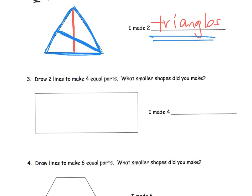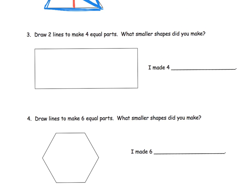Now here is the one that I really want to talk about, question three. It says draw two lines to make four equal parts. Okay, now I suspect what the authors of this book were thinking about was one, two, there's our two lines, and there are our four equal parts. Okay, so the answer would be I made four rectangles.